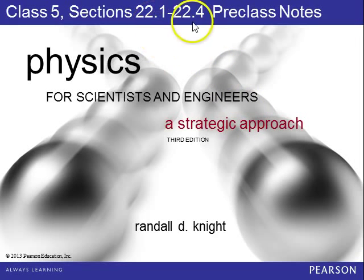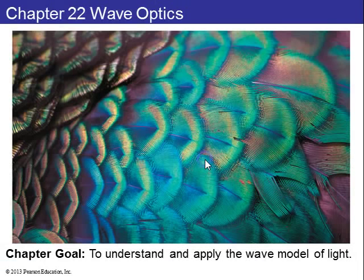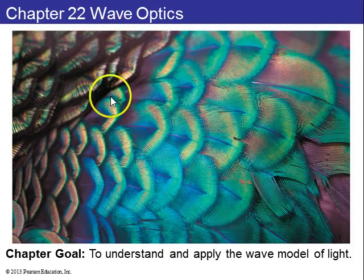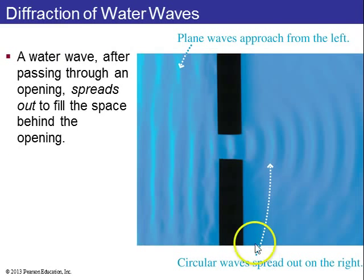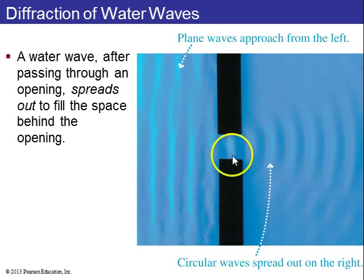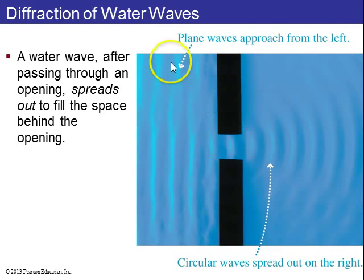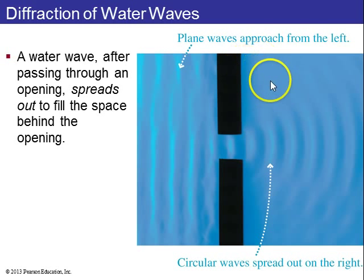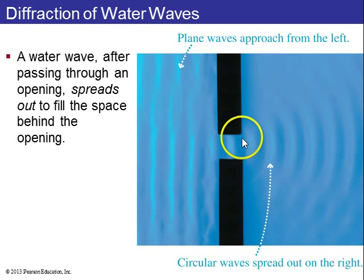Let's go through the first four sections of chapter 22 on wave optics. Light is a wave, as we learned earlier, and we will apply the wave model to light. If you look at a water wave that travels along and goes through an opening in a sort of breakwater that stops and reflects these waves, you'll see that immediately on the other side of the breakwater there are no waves. But the waves go through the opening, and when they go through they spread out.